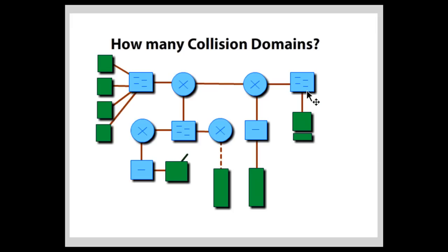So, and then with the switches, we can just count the links and the same thing with the router, but not when it's connected to the hub. So anyway, this is one, two, two collision domains, two connections from this switch. Then this is one collision domain.